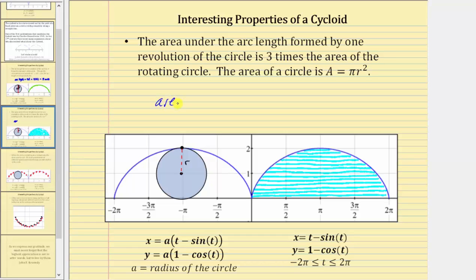So the area is equal to three times pi times r squared. Notice how the radius of the circle is one unit, which means the shaded area is three times pi times one squared, which equals three pi.